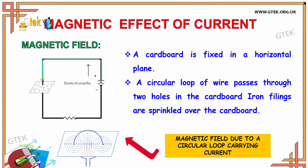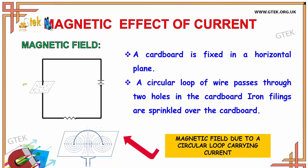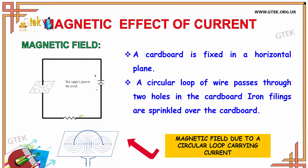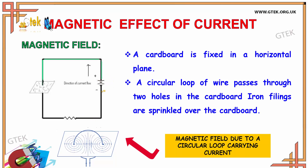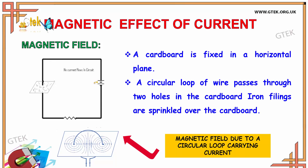You could see the picture where the iron filings are arranged in a concentric circular fashion when the current is not flowing. Now the current is flowing since the circuit is closed. One end is positive and the other end is negative.